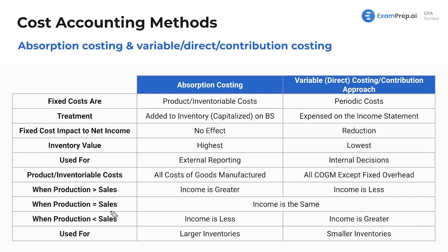When production equals sales — say we make $1,000 worth of goods and we sell $1,000 worth — the income level is the same regardless of which method you use, because we sold everything we made. When production is less than sales — say cost of goods sold is $1,500 and production is $1,000 — income would be less under absorption costing because we sold inventory from prior periods, and income would be greater under variable direct because we don't have those expensed fixed costs from the current period.